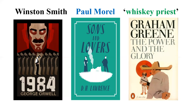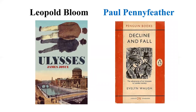Graham Greene's The Power and the Glory is set in Mexico during a war, featuring a Catholic priest simply named the Whisky Priest, whose struggle to survive — and ultimate execution — is the story. James Joyce's Ulysses (published 1922) marked the beginning of the modernist movement; it follows Leopold Bloom and Stephen Dedalus walking the streets of Dublin, with the last chapter from the perspective of Molly Bloom. Decline and Fall is a novel by Evelyn Waugh, featuring the character Paul Pennyfeather.